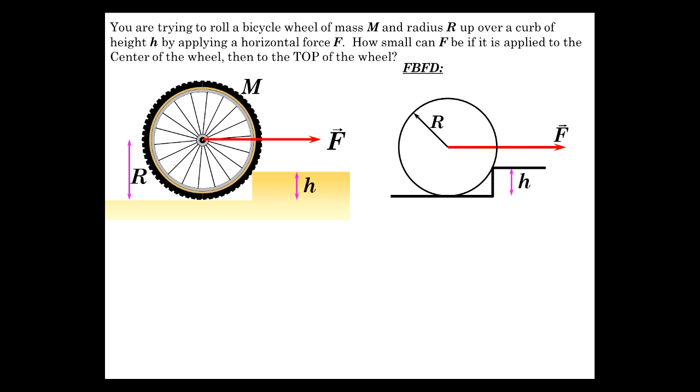So our free body diagram: height h is the curb, radius R, the application force F, and Mg from the center of the wheel straight down. You might already observe, to get this to move over the curb, we've got to have a force from this point here across this radius arm, a clockwise torque.